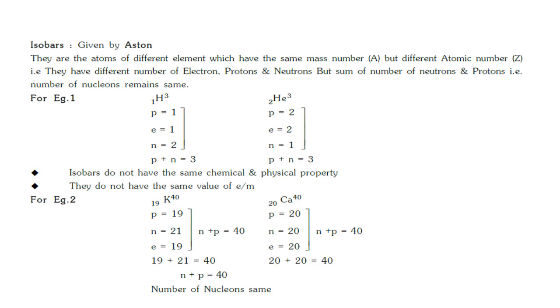In this lecture we will cover radioactivity. Before we start with radioactivity, we will discuss different types of atoms from elements based on the number of electrons, protons, and neutrons. The first one is isobars. They are the atoms of different elements which have the same mass number but different atomic number.